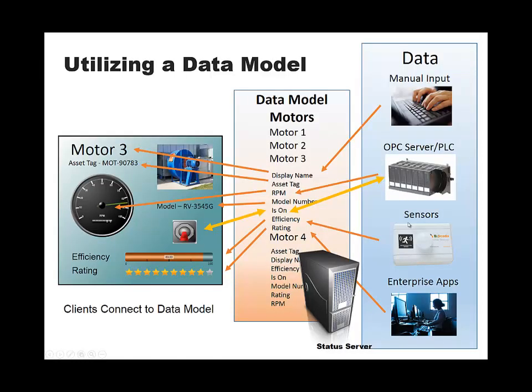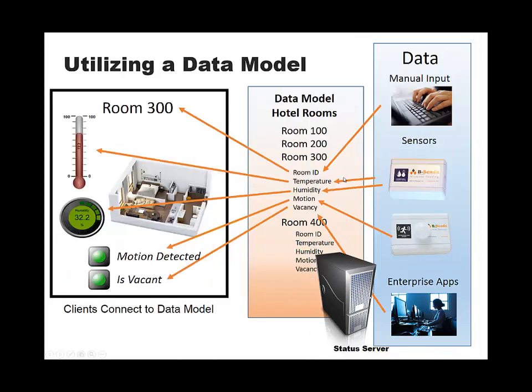At the core of Status, whether it's Status Device Cloud or Status Enterprise, is a data model. Live data comes into the system from your devices or even manually input, and it goes to the model. Any client applications that are interested in that information connect up to the model to get it — they're not connecting directly to the devices. All the complexity of how the data gets into the system is abstracted away, leaving your client applications with a nice, clean, organized structure. This data model can be anything you want: motors, pumps, stores, hotel rooms, pump stations — whatever you define. The system is customized for exactly how your business operates and exactly the types of things that you're monitoring.